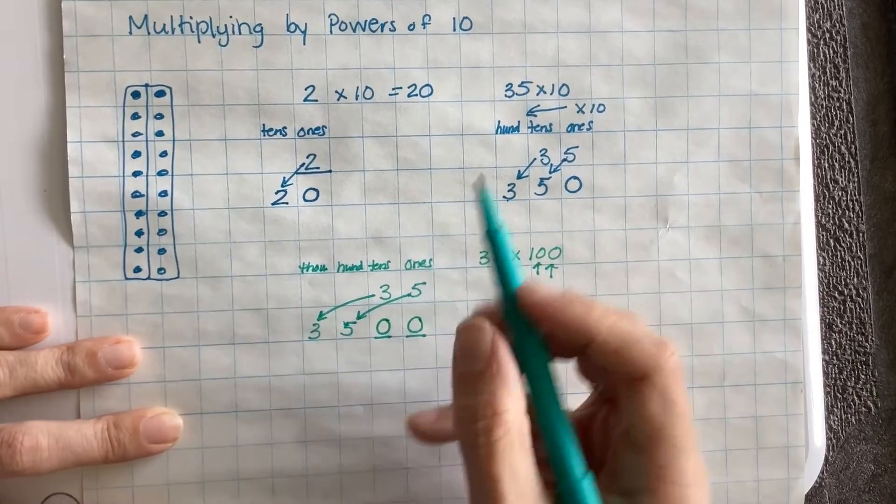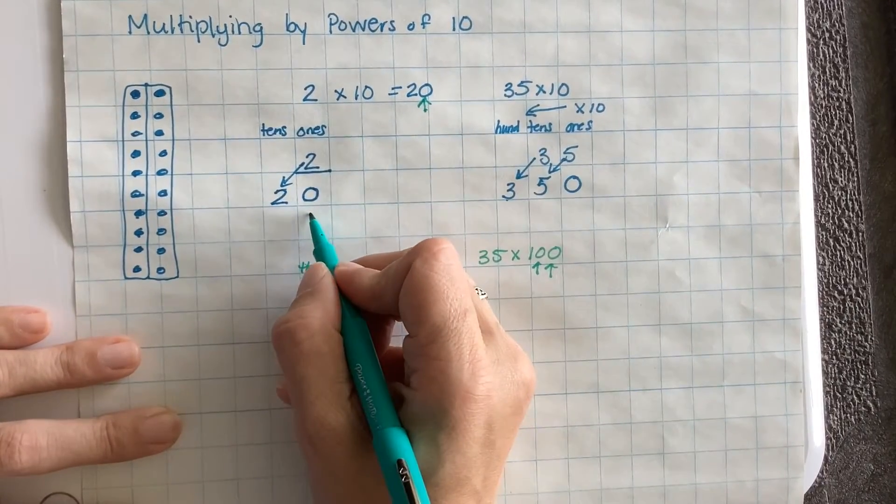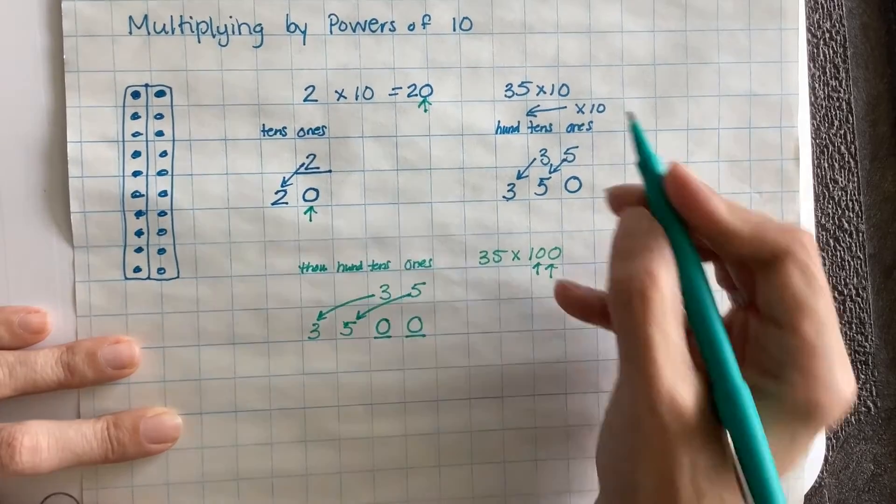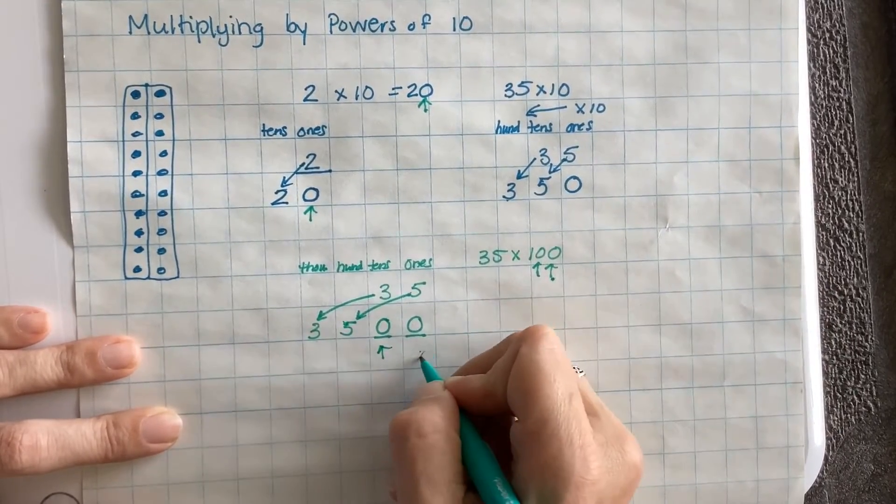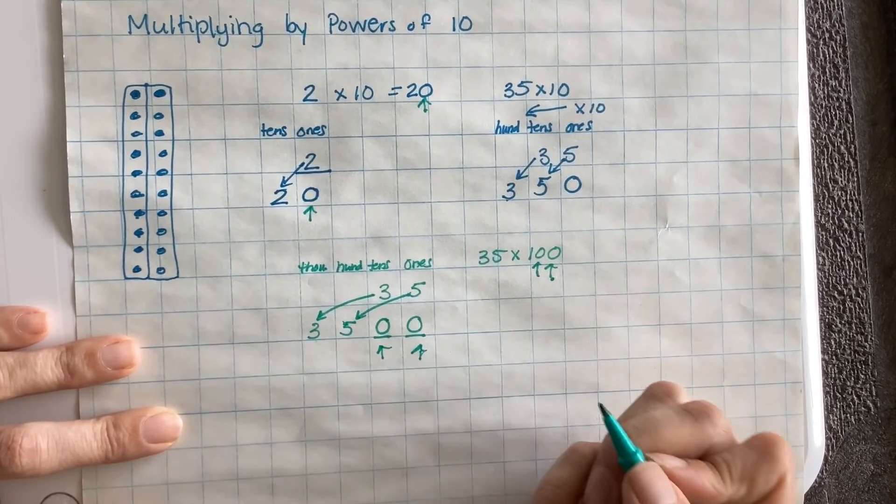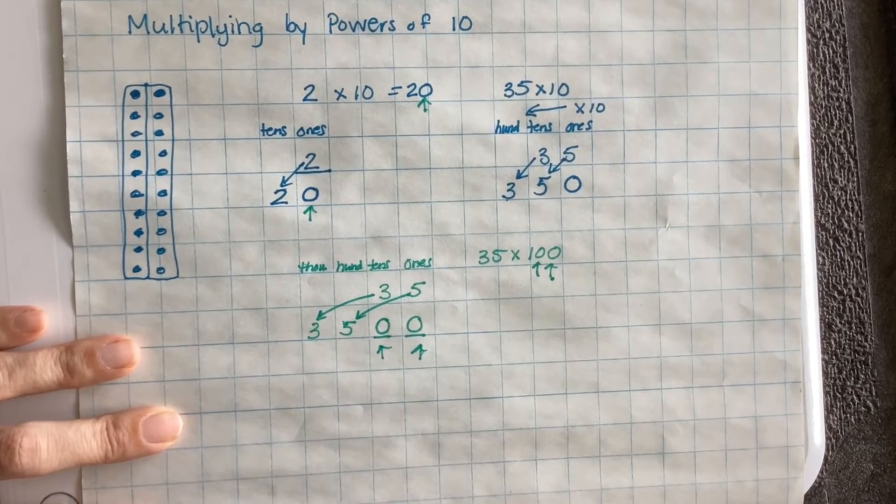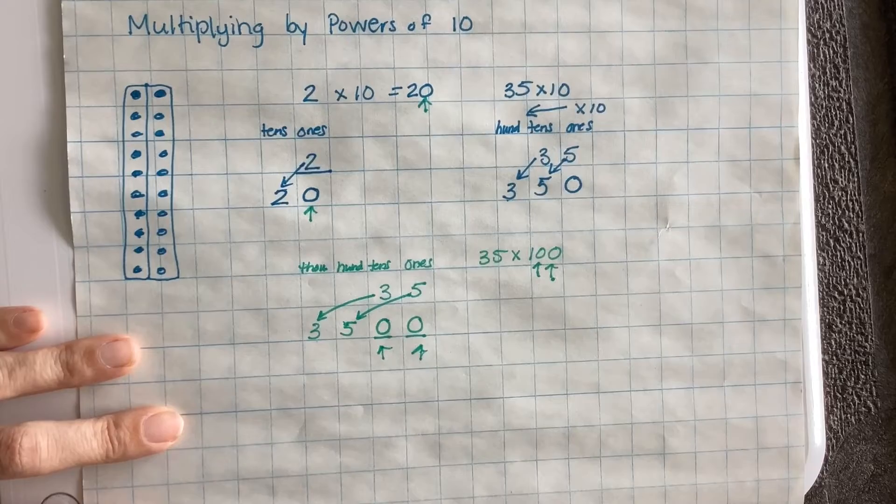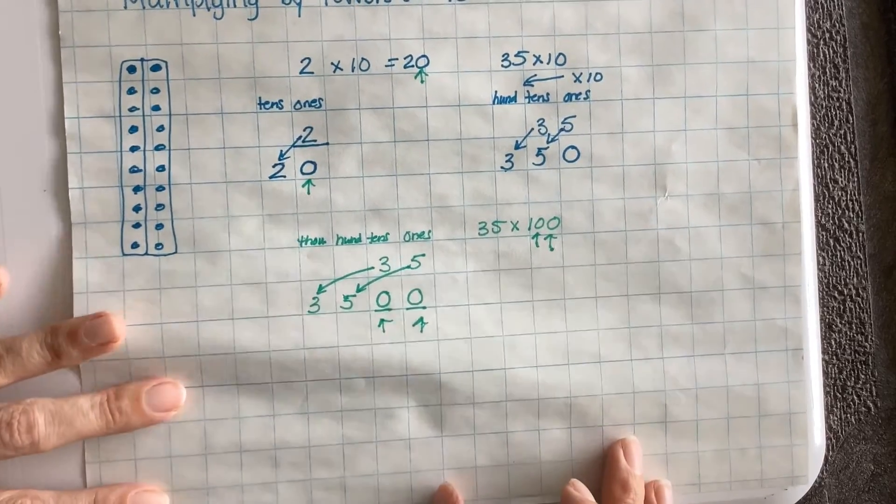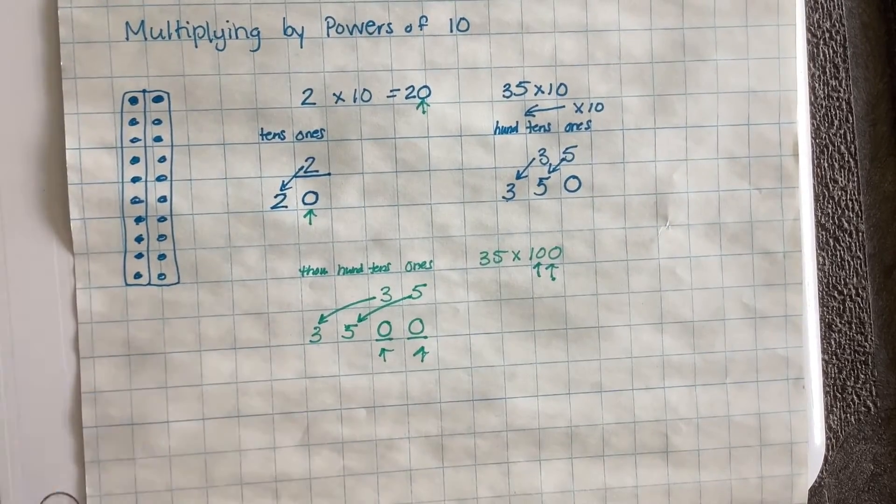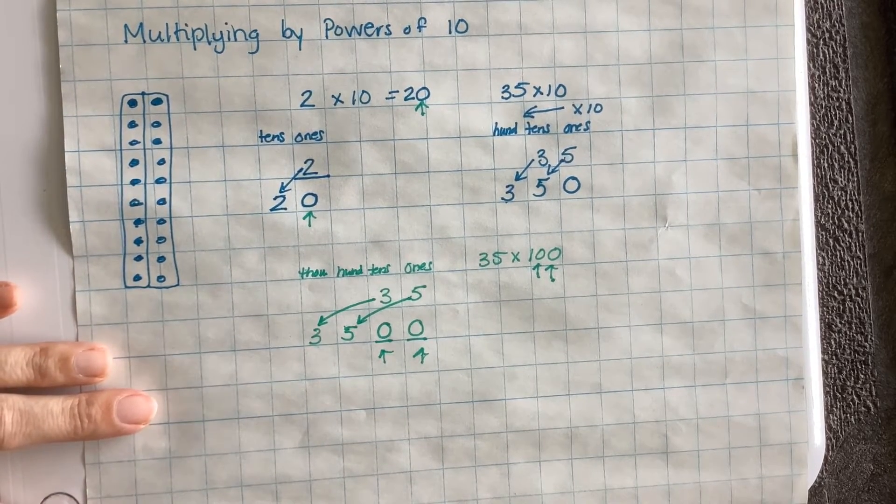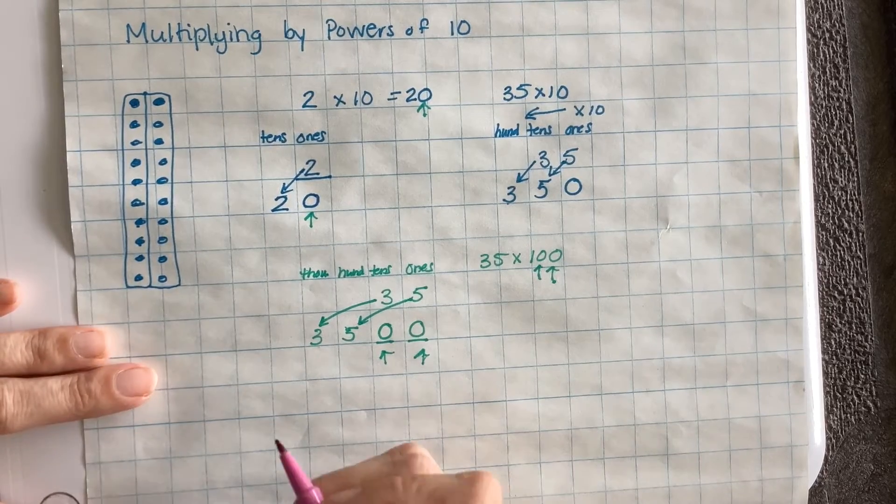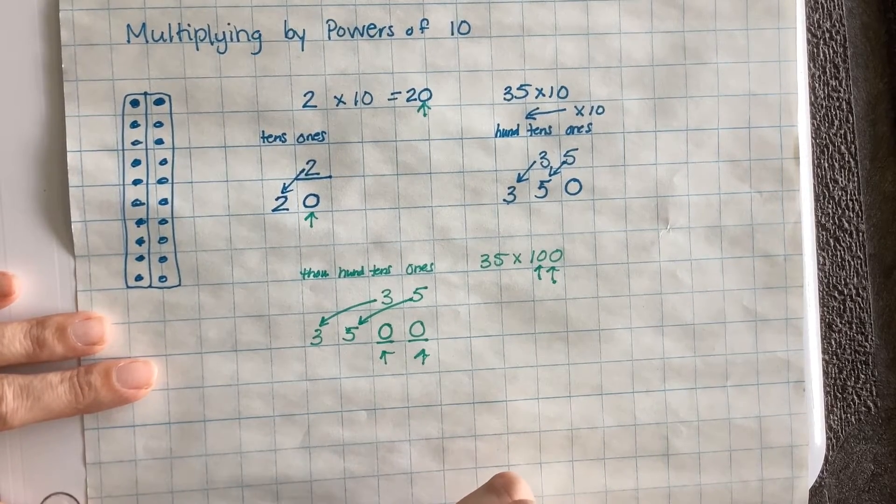Can you notice that when we multiply by 1 power of 10, we add 1 zero on the end? And when we multiply by 2 powers of 10, we put 2 zeros on the end. So we can remember a shortcut for this by remembering that no matter what number we have, if we multiply it by a power of 10, like 10, 100, 1,000, 10,000, any power of 10, then we can just use that number of zeros. That works with larger numbers as well.